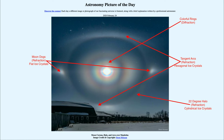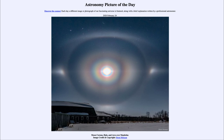It takes quite a bit to happen to get this image — just by coincidence, having all of the different ice crystals in the correct positions to see this. As noted in the description, it didn't last very long; within a few minutes it had already disappeared and the sky had gone pretty much back to normal. So that was our picture of the day for February the 24th of 2020, titled Moon Corona, Halo and Arcs over Manitoba.